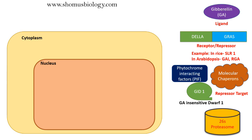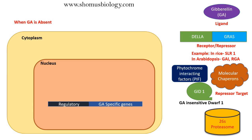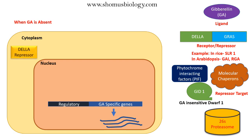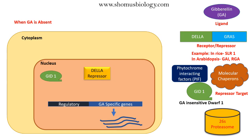Now we'll see what happens in the absence of gibberellic acid. Normally, the nucleus contains the regulatory region and gibberellic acid-specific response genes, which will ultimately make proteins that regulate the responses of gibberellic acid. When everything is fine with no repressor, the GA-specific genes will be transcribed into mRNA, transported to the cytosol, and translated into their respective proteins. But when there is no gibberellic acid present, the DELLA repressor enters the nucleus and associates itself with GID1.